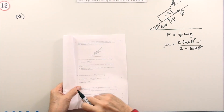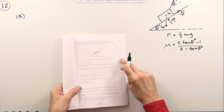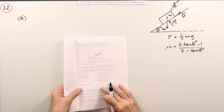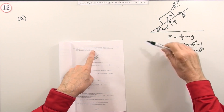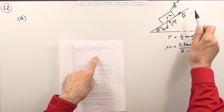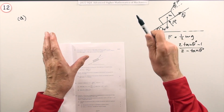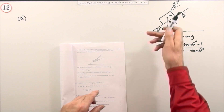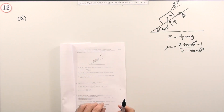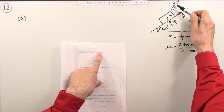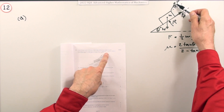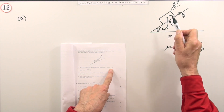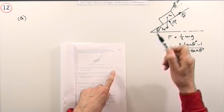Number 12 from the 2022 mechanics paper — a 10-mark question, the classic block on an inclined plane. A box of mass m is at rest on a rough slope. At rest means no movement, so F = ma gives F = 0: the sum of all forces is zero in any direction. It's held in place by an external force F, and in the first part F is equal to half mg, just enough to stop it slipping down.